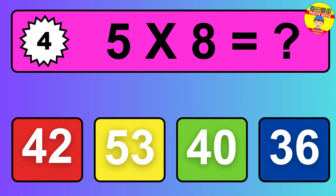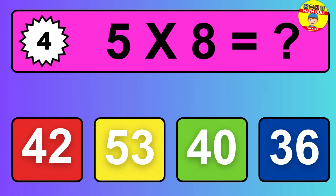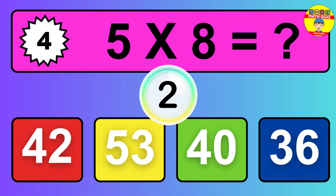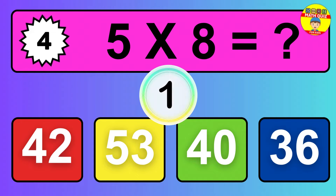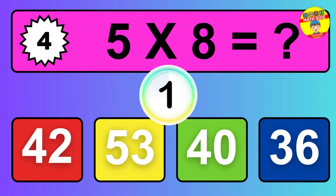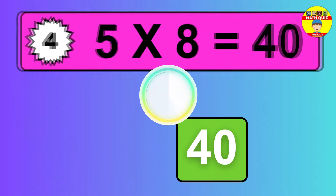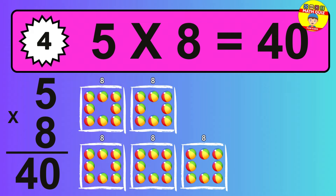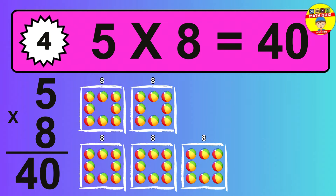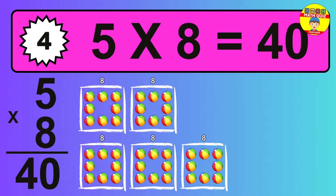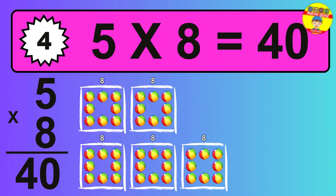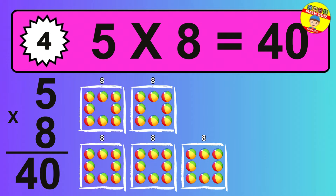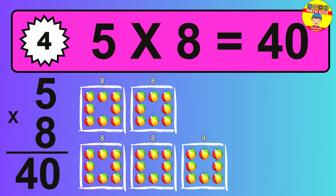Question 4. 5 times 8 equals what? The answer is 5 times 8 is 40. To calculate, we have 5 groups with 8 balls each one. So, how many balls do we have? 40 balls.